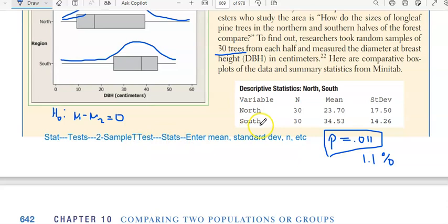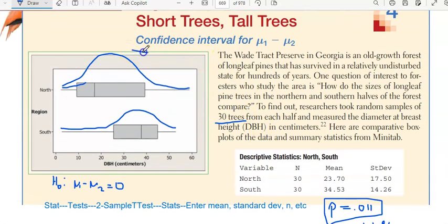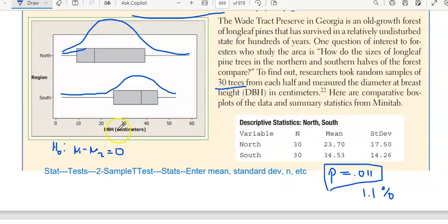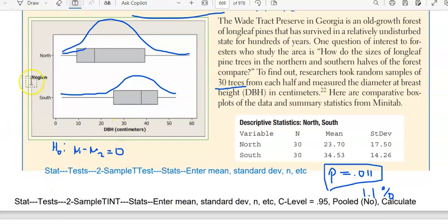Now to actually create the confidence interval, because this lesson is about creating confidence intervals. To construct a confidence interval, you can do the same thing. You can go to STAT, go to TEST. But instead of being two sample t-test, you're going to do two sample t-interval. Hit STATS, enter the mean standard deviation as you did previously. Let's use the 95% confidence interval right now, and then let's do POOLED, NO. And then hit CALCULATE.